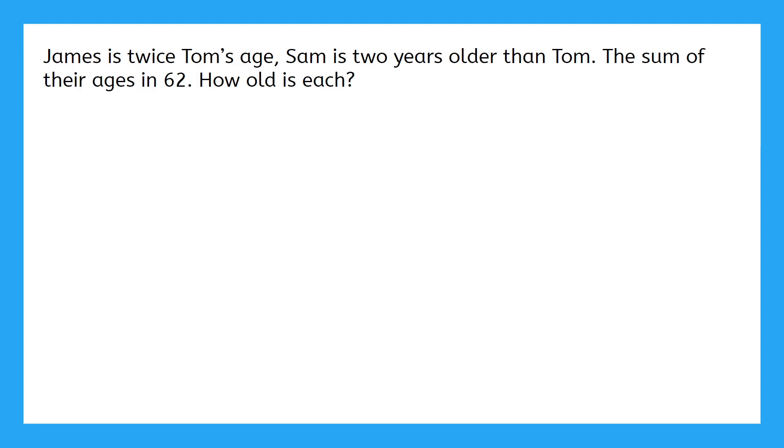The key to solving problems like these is writing everything out in math. James is twice Tom's age, so James's age is 2 times Tom's age. Sam is 2 years older than Tom, so Sam's age is the same as Tom's plus 2. Finally, if we add everyone's ages together, James, Sam, and Tom, the sum is 62.